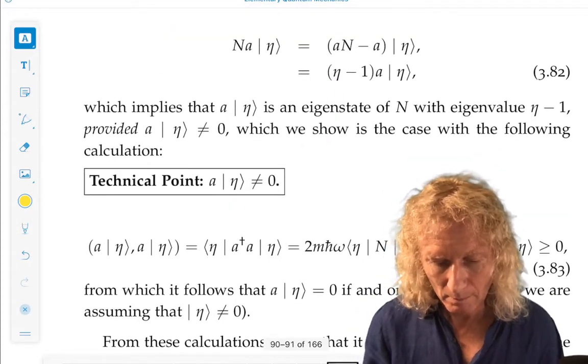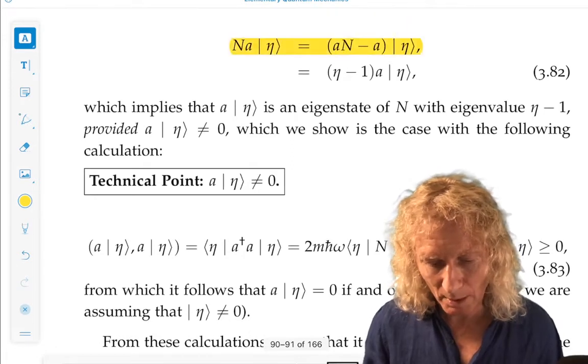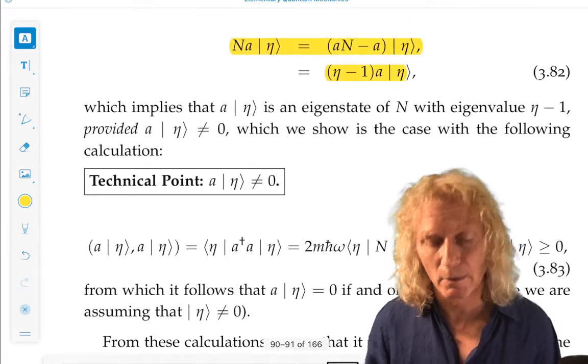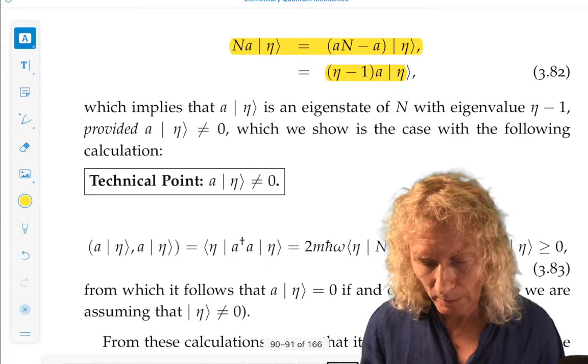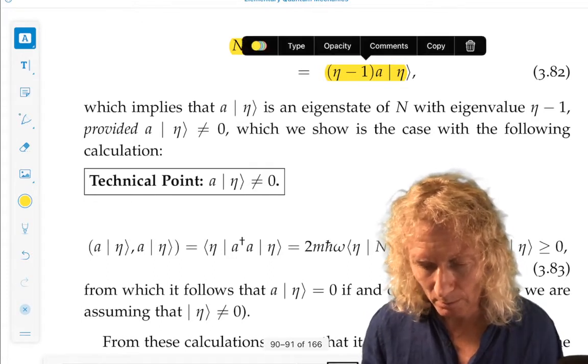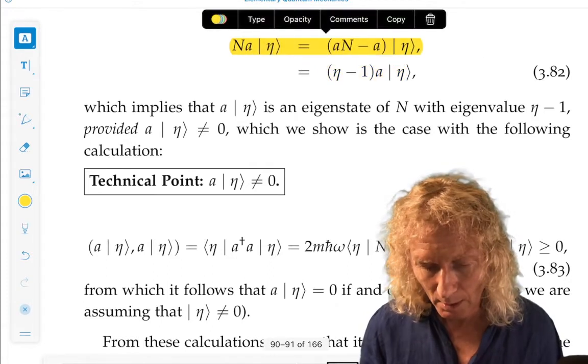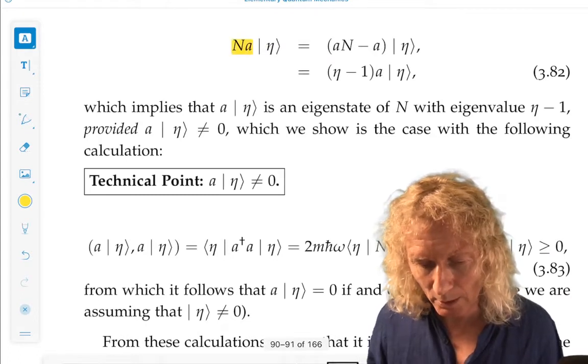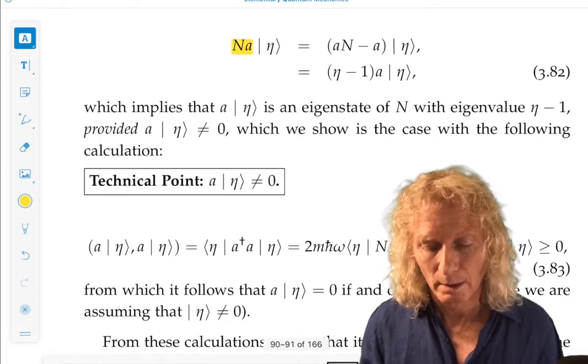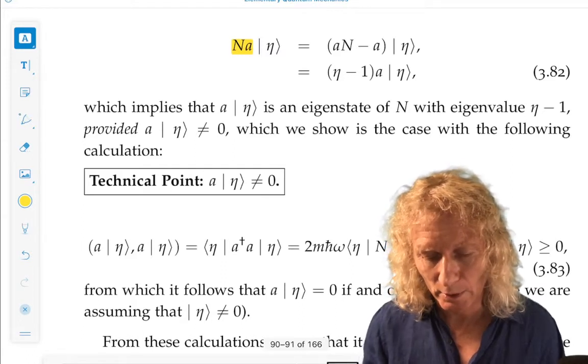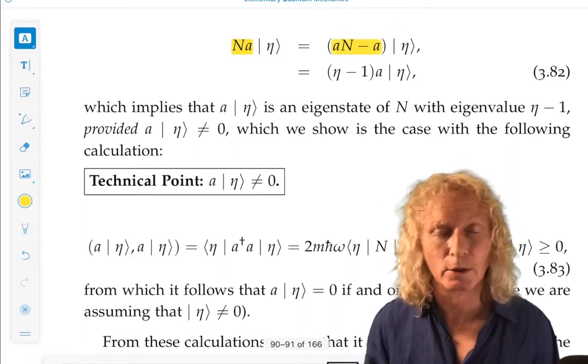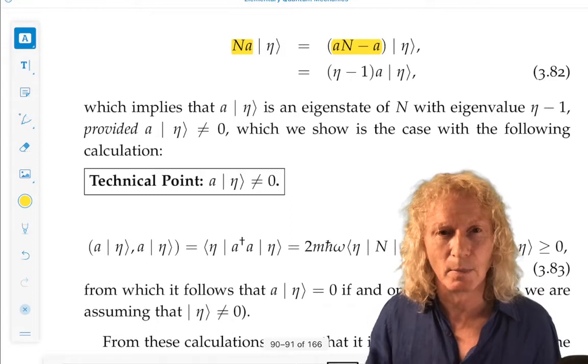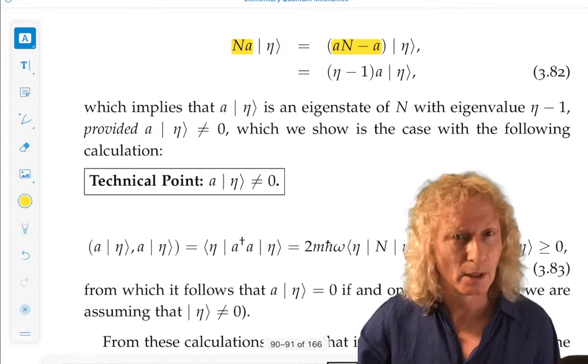Similarly, it's the same type of calculation that we did above, using the commutation relation, because we want to get the number operator acting on ket eta, and we need to switch the order, but we do that, we incur, we have to add this minus a. That was a commutator.